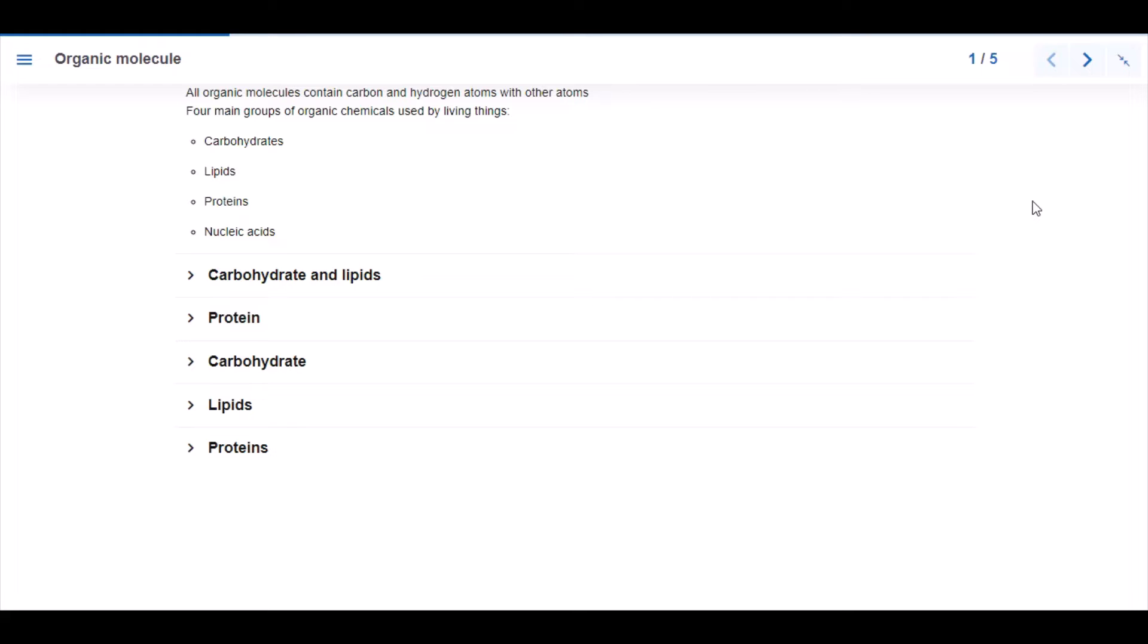Carbohydrates and lipids have chemical elements that make them up, and these include carbon, hydrogen, and oxygen. In protein, we find nitrogen in addition to carbon, hydrogen, and oxygen. And sometimes we find sulfur in protein.